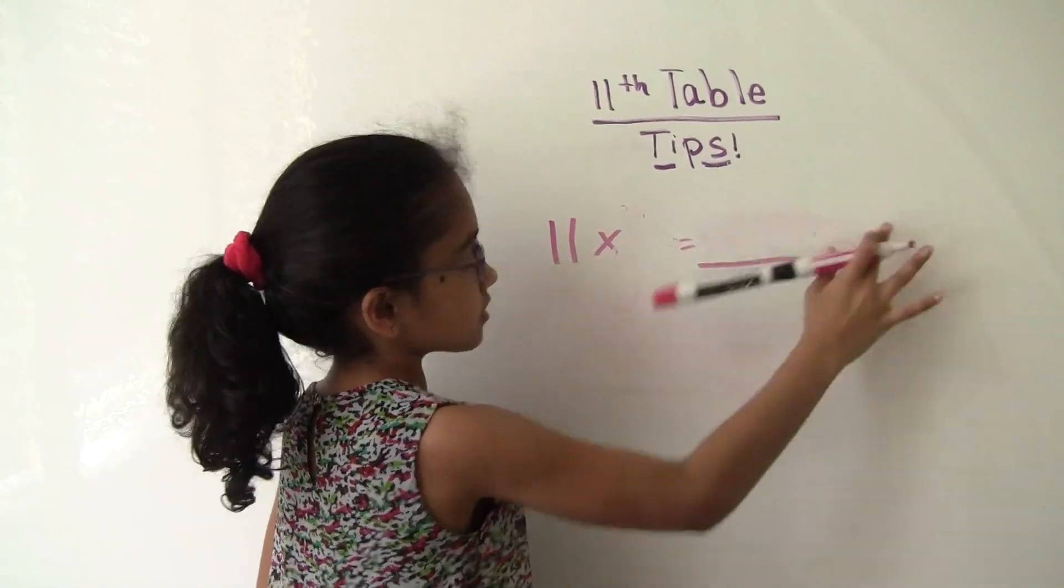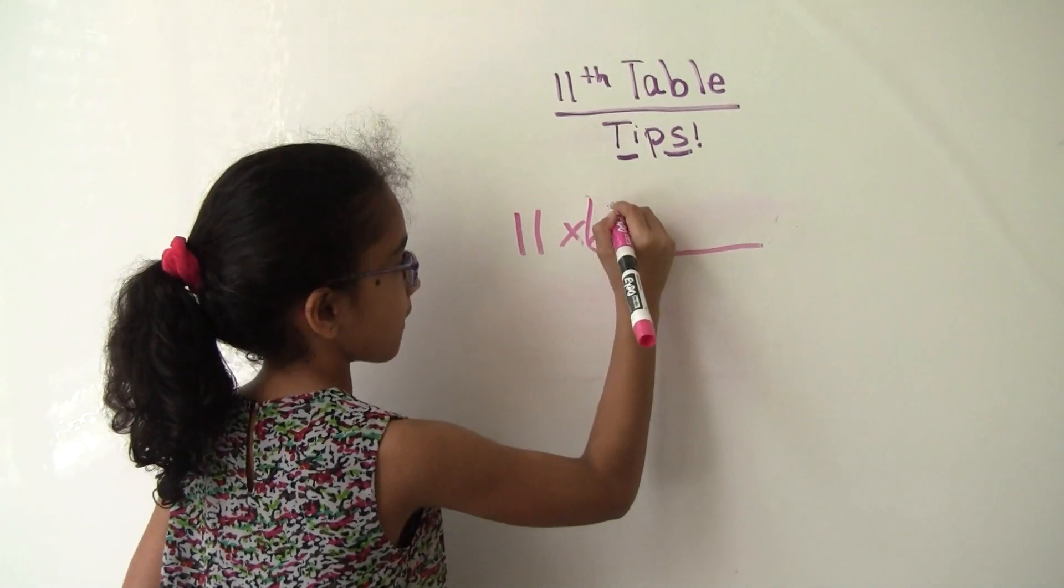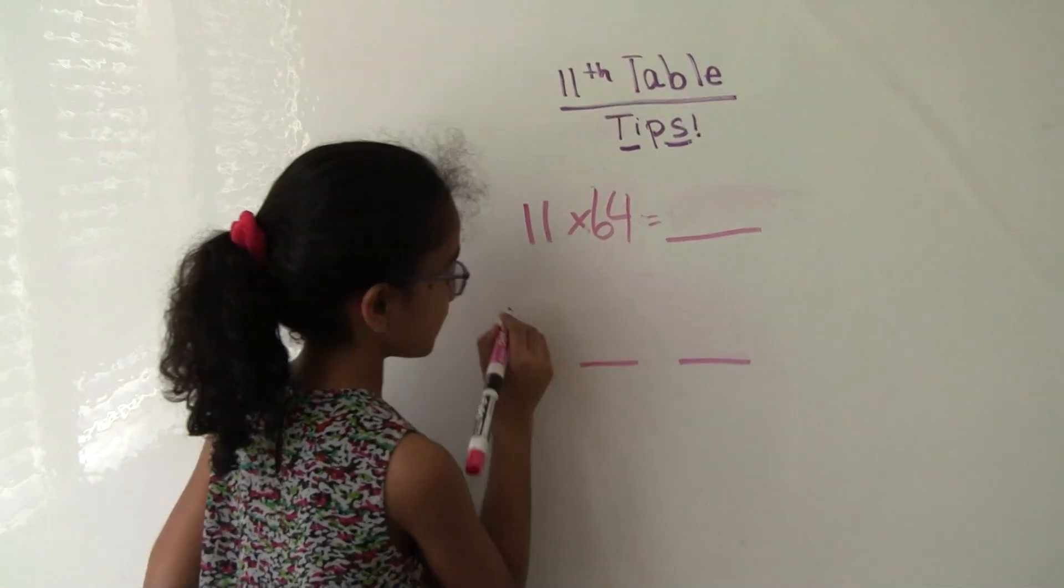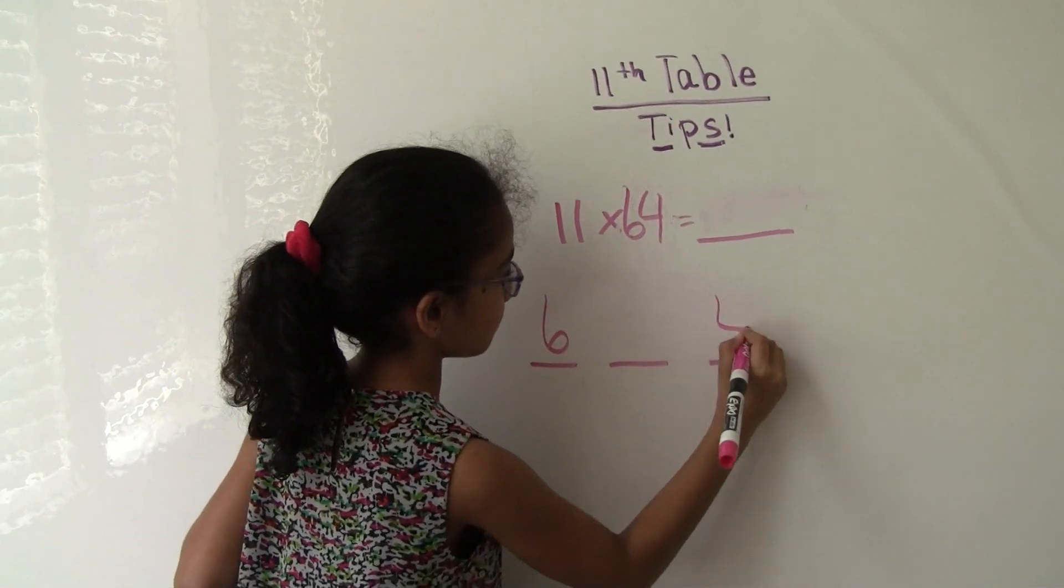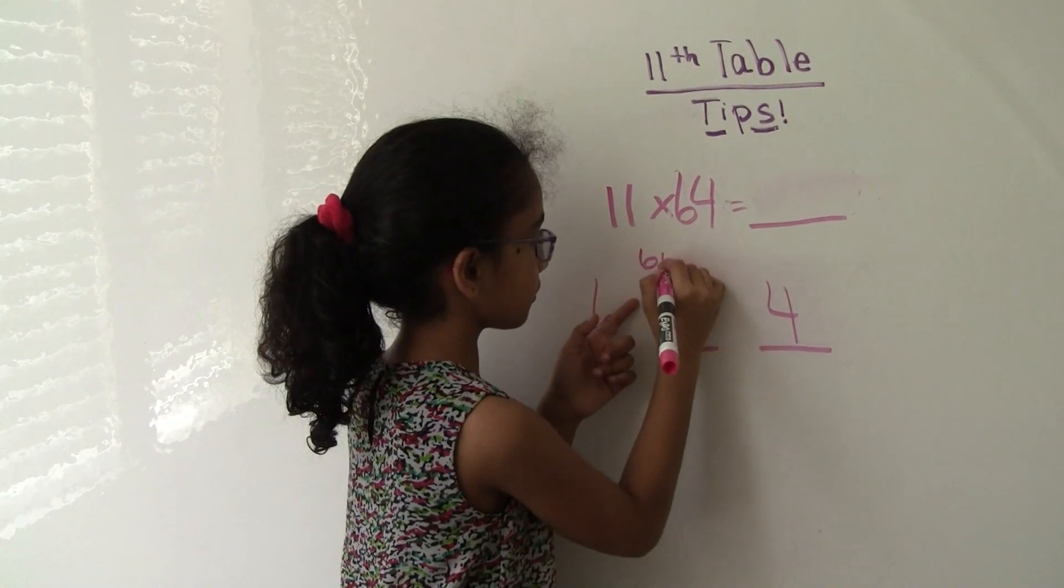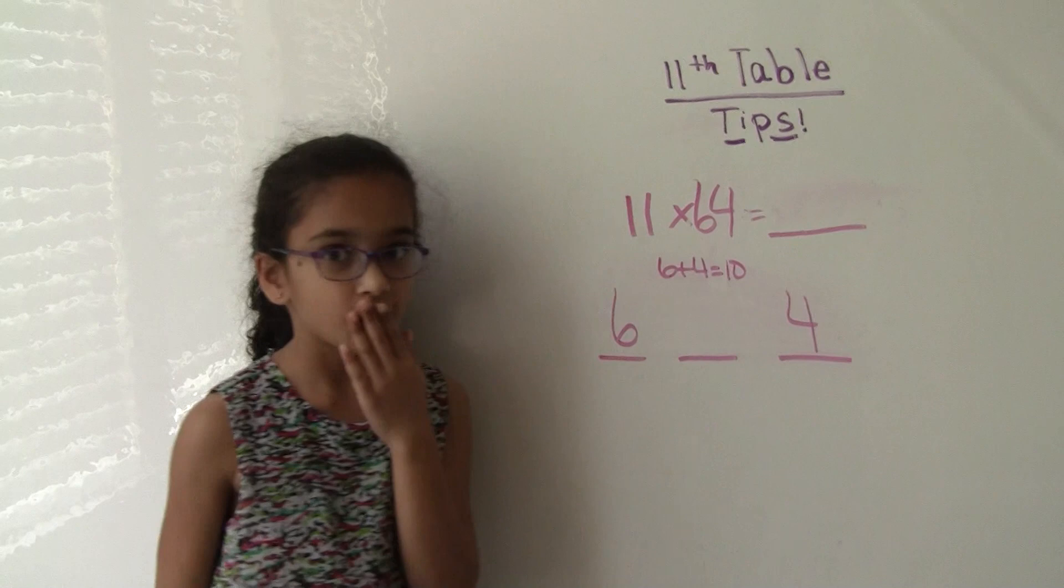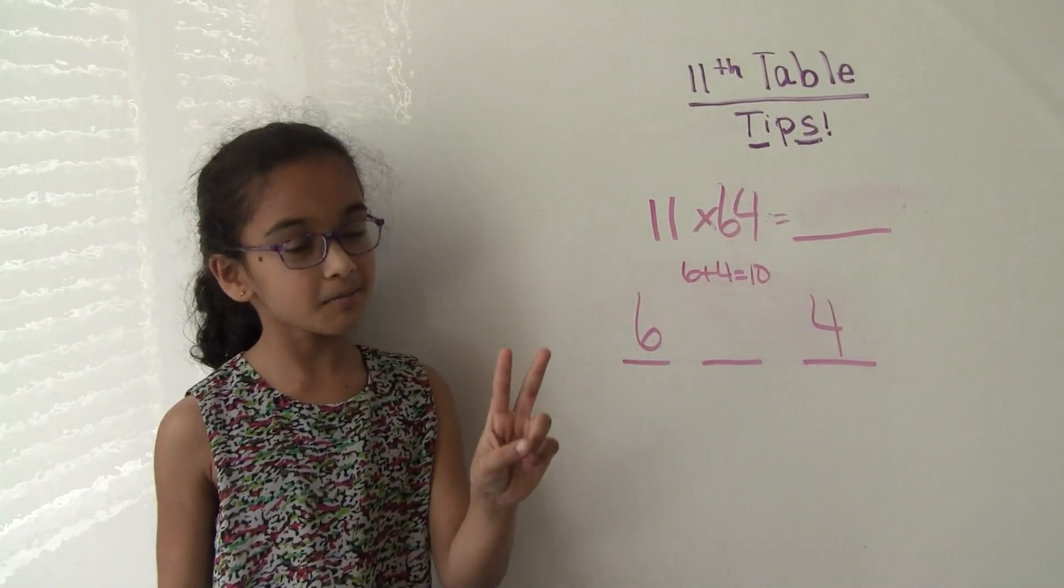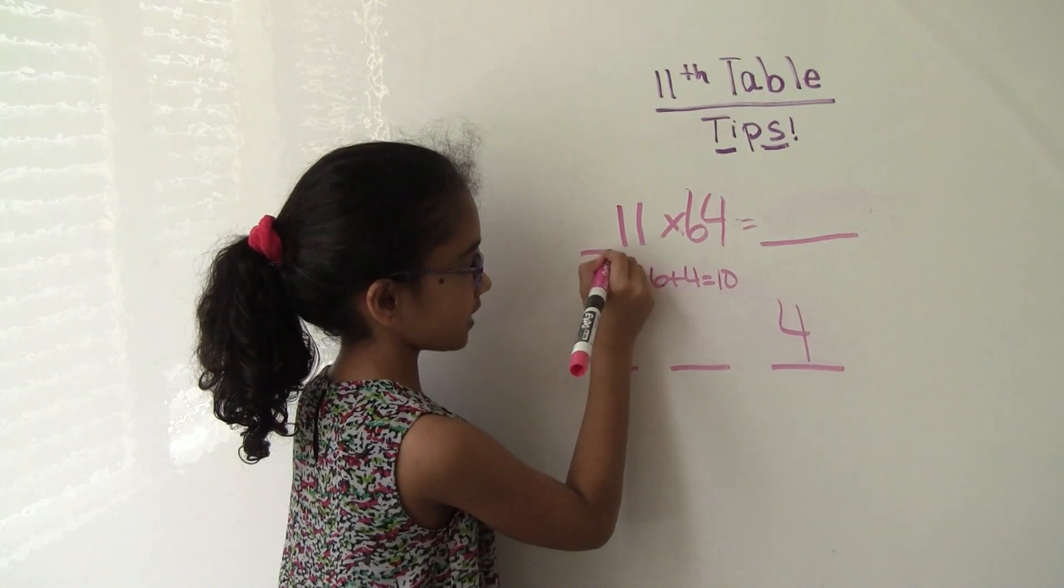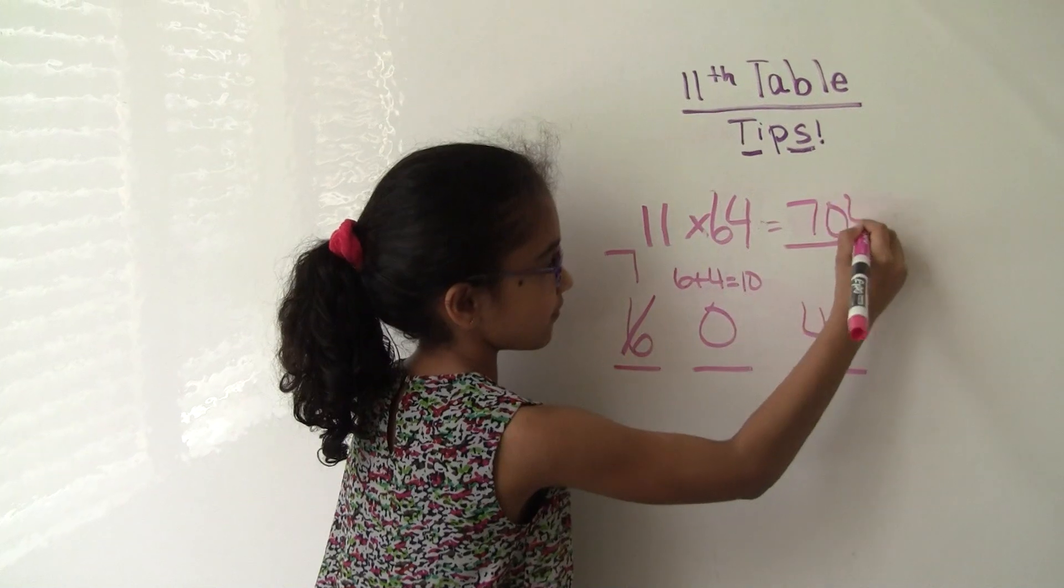Okay, so now we're going to try 11 times 64. Write your 3 down. 6 and 4. 6 plus 4 equals 10. Uh-oh, 10 has 2 digits. So guess what we're going to do? We're going to add the 1 here and make that 7 and add a 0 here. So our answer is 704.